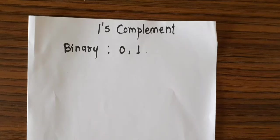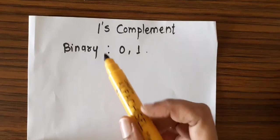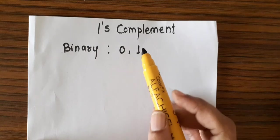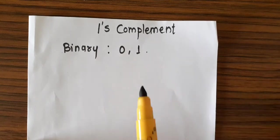Hello all. Now we will see how to obtain 1's complement of binary numbers. Binary supports 2 bits, 0 and 1, and the maximum valued bit from binary is 1.